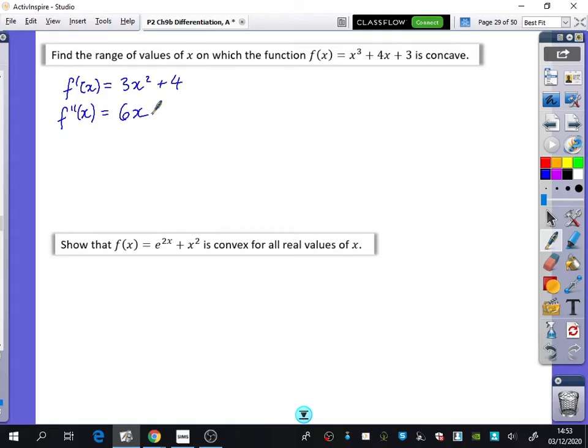If we want it to be concave, then we want f''(x) to be - it's concave if f''(x) is less than zero. In other words, if 6x is less than zero, or if x is less than zero. The mark schemes will accept that or that. You don't have to write that statement, but I just think it's safer to write that down to say why you're doing the particular thing that you're doing.